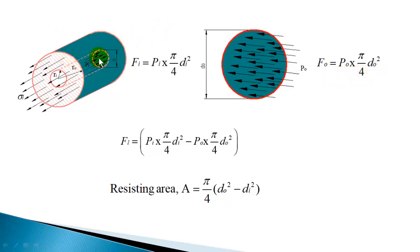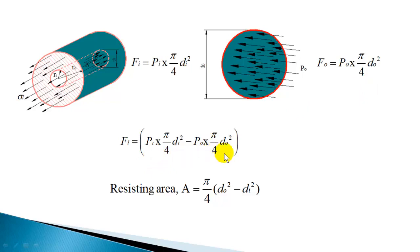The net force is the force from inside minus force from outside. Assuming internal pressure is more (which is usually the case), you get the bursting force in the longitudinal direction FL = Fi − F0 = Pi × π/4 × Di² − P0 × π/4 × D0². This gives the bursting force acting on the end surface. FL acts outward on one end and in the opposite direction on the other, stretching the cylinder walls.